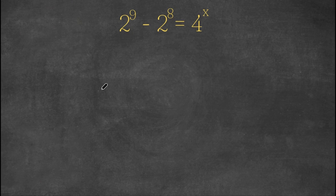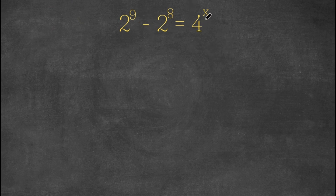Hey guys, welcome back to Qlik Academics. In today's video, I'm going to be teaching you guys how to solve this exponential equation. So we have 2 to the power of 9 minus 2 to the power of 8 equals 4 to the power of x.